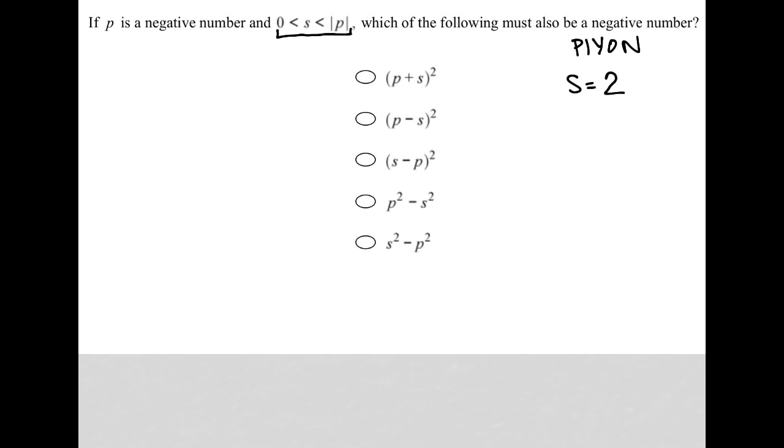And then we know that S is less than the absolute value of P. Now the fact that there's an absolute value there, I'm going to actually make P a negative number, so let's call it negative three, because then that makes this still true. So two is still less than the absolute value of negative three, because the absolute value of negative three would be positive three.